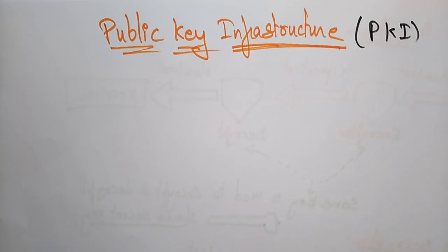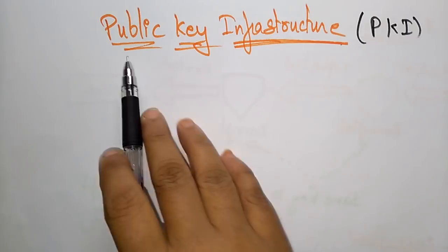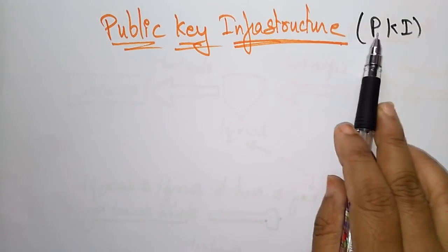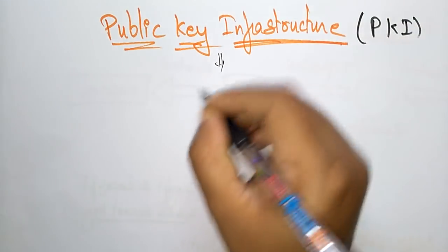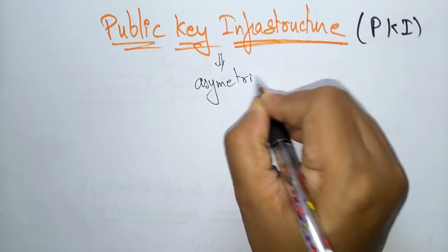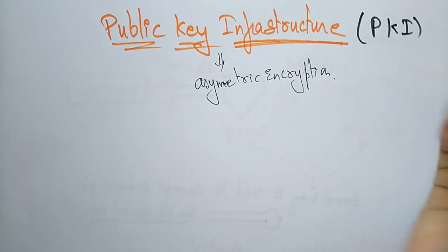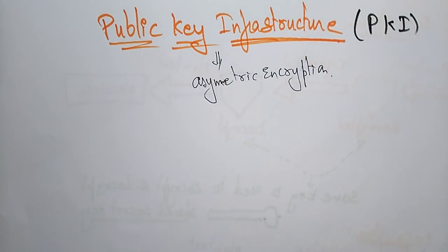Welcome to the next cloud security mechanism: Public Key Infrastructure (PKI). In the previous video I explained about encryption, covering asymmetric and symmetric encryptions. Now let us see the second security mechanism, which is Public Key Infrastructure. PKI is also called asymmetric encryption because it uses two different keys.